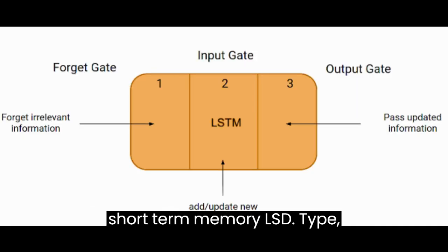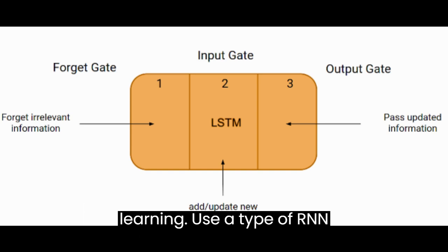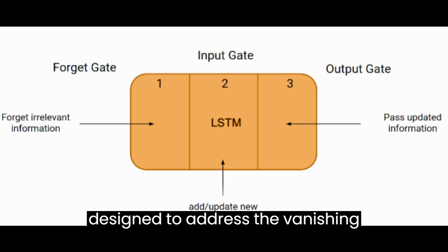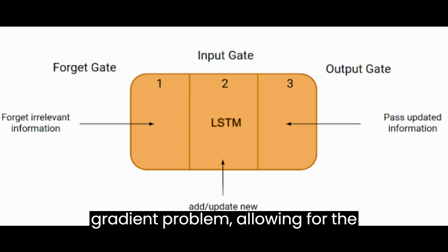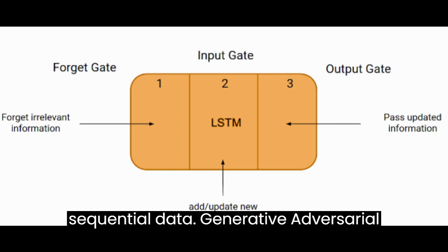Long Short-Term Memory (LSTM). Type: supervised learning, unsupervised learning. Use: a type of RNN designed to address the vanishing gradient problem, allowing for the learning of long-term dependencies in sequential data.